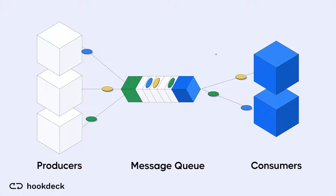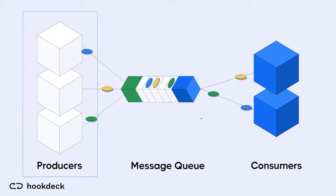Simply put, a message queue receives request messages from one component and delivers it to another component on schedule. A message is a piece of data that can either be in XML or JSON format and contains all the information required to fulfill the request. The component making the request is known as a message producer.